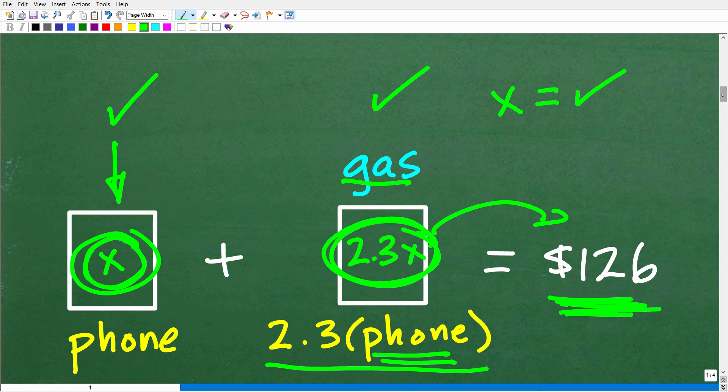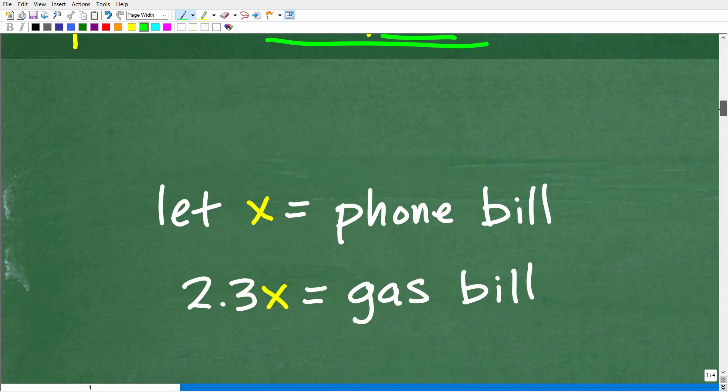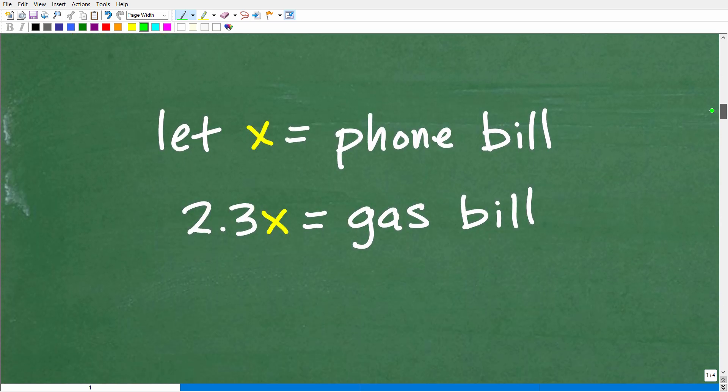Okay, so let's go ahead and be very specific about these variables. So this is the way you want to do it when you are solving a math or an algebra word problem. You want to delineate what each variable stands for. So we're going to say let x equal her phone bill. And of course, 2.3x will equal the amount of her gas bill.